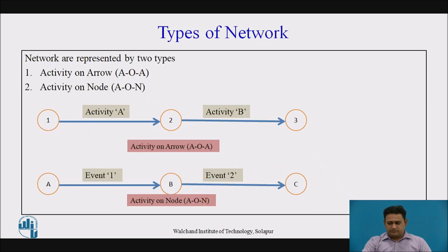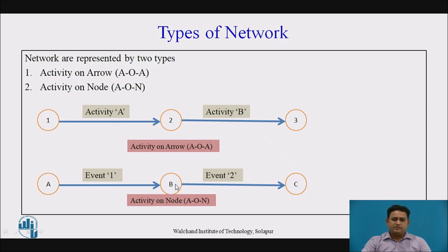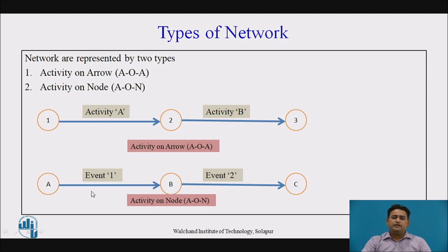Now the types of network. There are two types of network: activity on arrow and activity on node. In activity on arrow, the activities are represented above the arrow — or you can say activities are represented by the arrow — and 1, 2, 3 are the events. In activity on node, the nodes represent the activities: A, B, and C are activities represented by the nodes, and events are represented by the arrows. These are the two types of network technique diagrams.